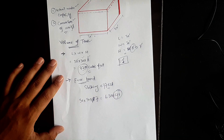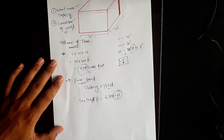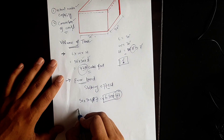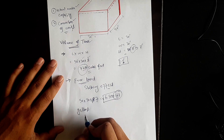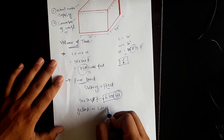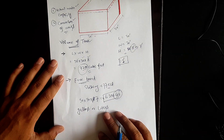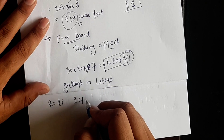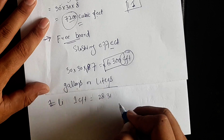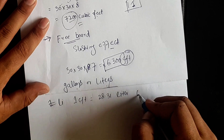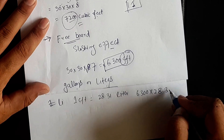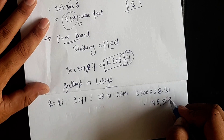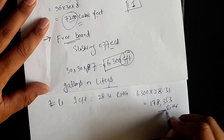So 30 × 30 × 7 gives us 6300 cubic feet — this is the actual volume of the water tank. We don't calculate volume in cubic feet for practical purposes; instead we calculate it in gallons or liters. One cubic foot is equal to 28.31 liters, so 6300 × 28.31 equals 178,353 liters.